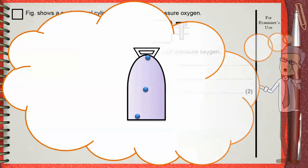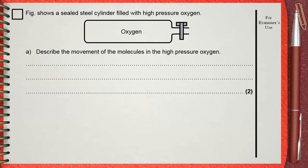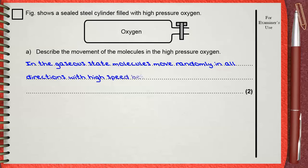So this is what we are going to say here. In the gaseous state, molecules move randomly in all directions with high speed between the collisions with the walls of the cylinder.